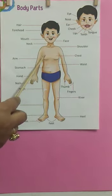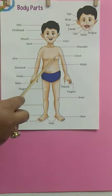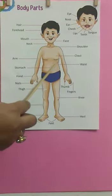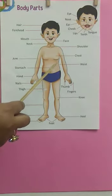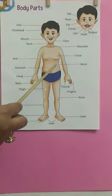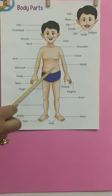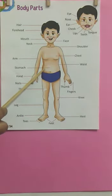We have our chest below our shoulder. Then we have our waist — we wear our trousers or our skirts on our waist. Then we have our stomach.